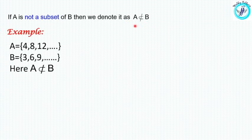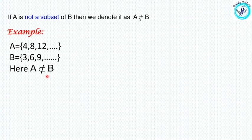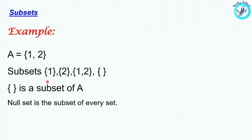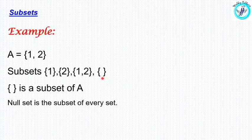Let's try an example. A is {4, 8, 12} and B is the set of multiples of 3. We check whether B is a subset of A. Looking at the elements, we have 1 and 2 elements in the next set. Adding the subset of A, B is the subset of A. The null set is also a subset of A.